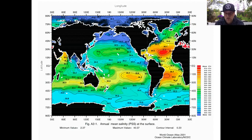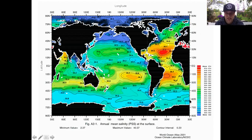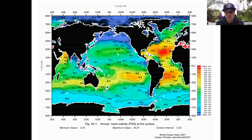For water to become very salty, the primary mechanism is evaporation. Areas near 30 degrees north and 30 degrees south tend to have higher salinities because of increased evaporation. Along the west coast, rivers add fresh water and there's more precipitation near 60 degrees north and south, causing lower salinities. Interestingly, the Atlantic Ocean has higher salinities than the Pacific — the Pacific is bigger, generating larger, longer-lasting storms that add more precipitation, lowering salinity.